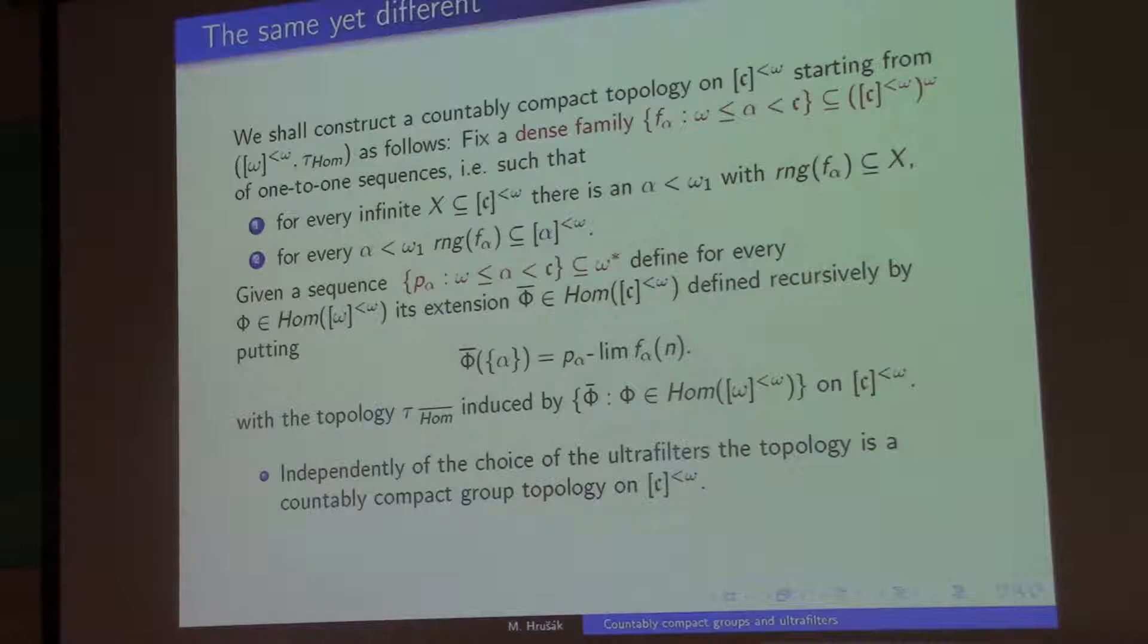And now, how am I going to do this? I fix a family of sequences for which I promise to have complete accumulation points. So in order for my group to be countably compact, I need this family of sequences to be dense. So that means every infinite subset of the group needs to contain one of these sequences.